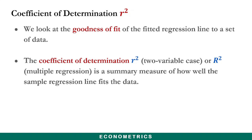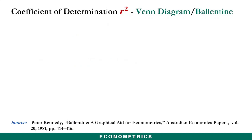The Coefficient of Determination, or R-squared, is a summary measure of how well the sample regression line fits the data. Let us look at this Coefficient of Determination in a Venn diagram — a visual view of this measure of the goodness of fit.